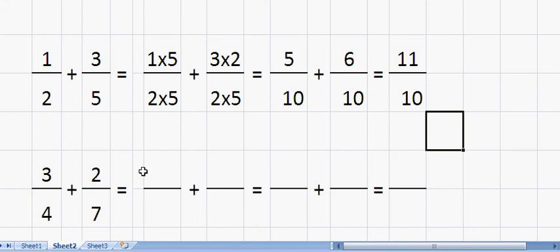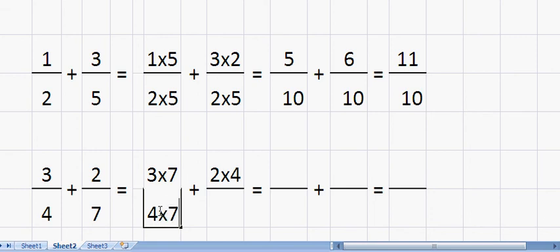On the top here, we're going to have three by seven, three by seven. On the top here, we're going to have two by four. On the bottom we're going to have four by seven, and on the bottom we're going to have four by seven.